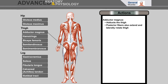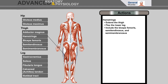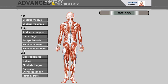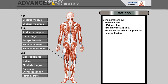Hamstrings extend the thigh and flex the lower leg, and include the biceps femoris, semitendinosus, and semimembranosus. Biceps femoris: flexion at the knee, laterally rotates the thigh if flexed at the knee, and extends the hip. Semitendinosus: extends the hip, flexes the knee, medially rotates the tibia. Semimembranosus: flexes the knee, extends the hip, medially rotates the tibia, and pulls the medial meniscus posterior during flexion.